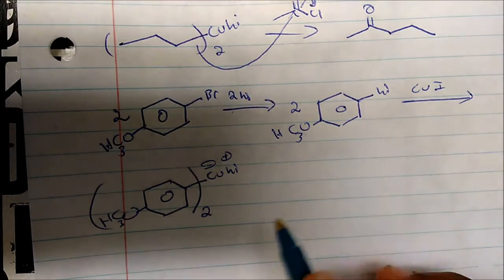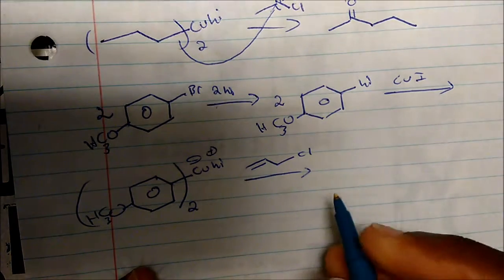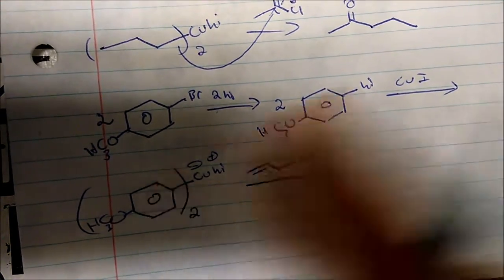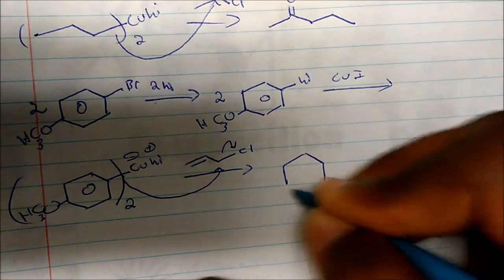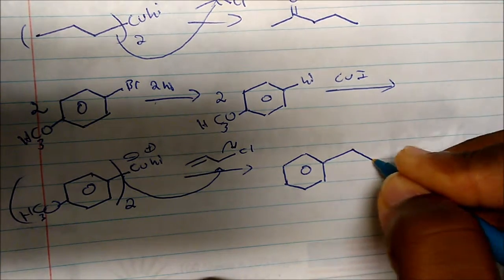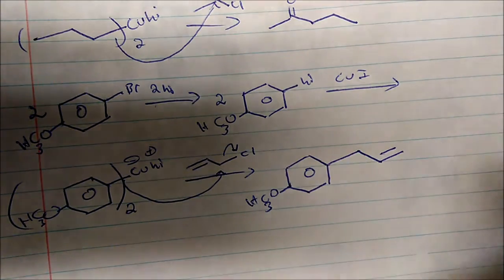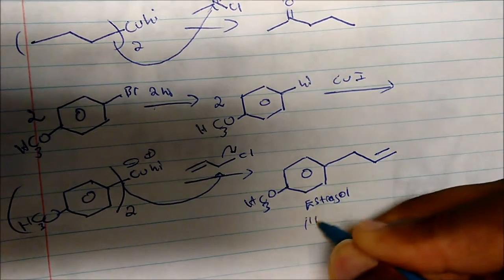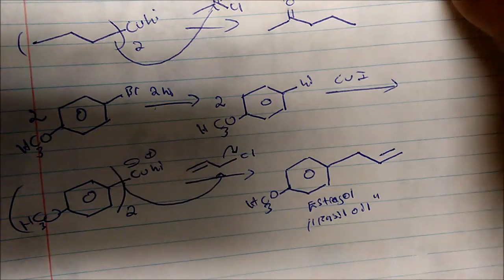We create two moles of the Gilman reagent and treat it with an SN2 target — for example, an alkyl chloride compound. The electrons in the carbon-copper bond are very nucleophilic and attack, displacing the chlorine. In the process, we form isobutyl benzene, also known as ibuprofen. So again, we form the Gilman reagent and treat it with any primary SN2 target; they also work well with acid chlorides.